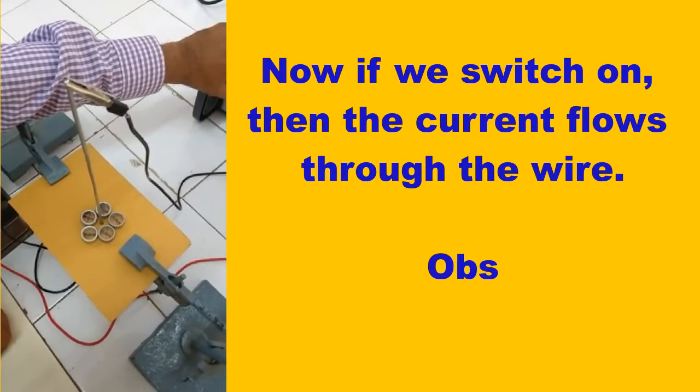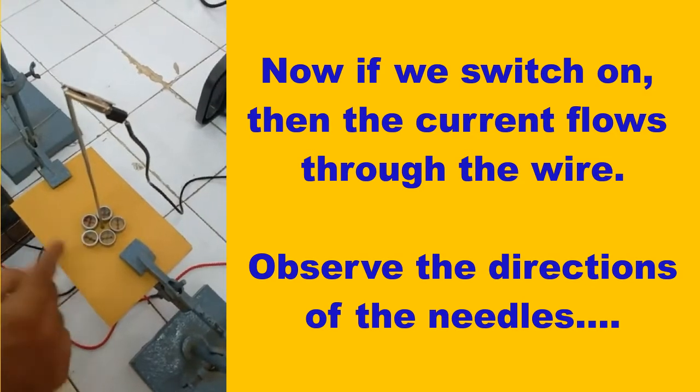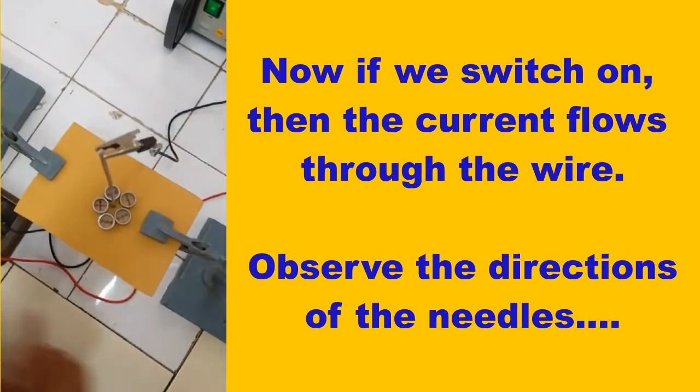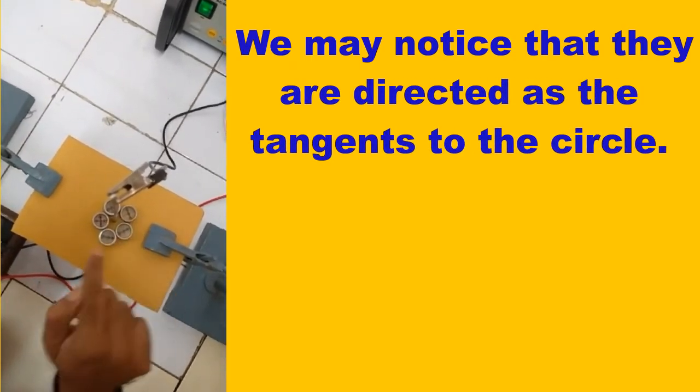If we switch on, then the current flows through the wire. Observe the direction of the needles. We may notice that they are directed as the tangents to the circle.